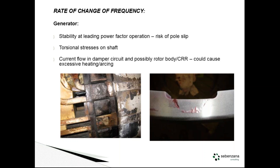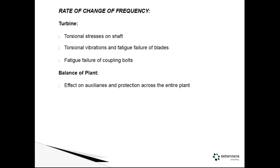If the machine goes out of synchronicity, you get like a squirrel cage of an induction rotor — it uses currents in the damper circuit to speed it up or slow it down. While you're rapidly changing frequency, you're inducing currents in this damper circuit. If it's not designed for it, you're going to have problems. This is a case where a damper circuit actually melted with severe arc damage onto a core retaining ring, which had to be thrown away. On the turbine, again, you've got torsional stresses, vibrations, and fatigue failure of blades in the long term.